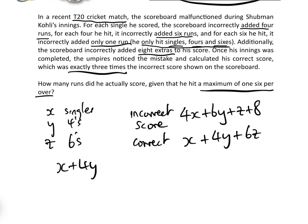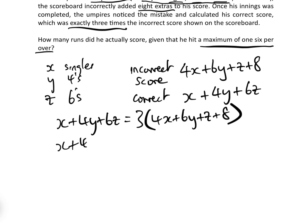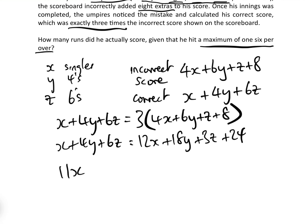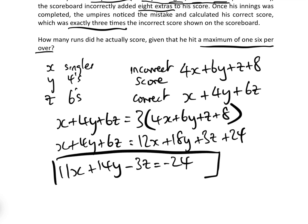We know that the correct score x + 4y + 6z equals three times the incorrect score, which is 4x + 6y + z + 8. Let's expand this out: x + 4y + 6z = 12x + 18y + 3z + 24. Moving everything to one side, we get 11x + 14y − 3z = −24. And that is our linear Diophantine equation in three variables X, Y, and Z.